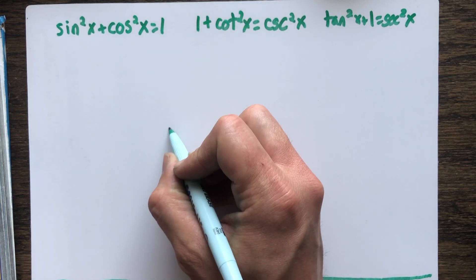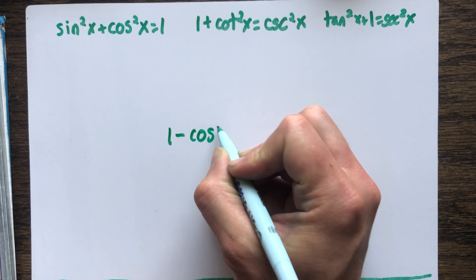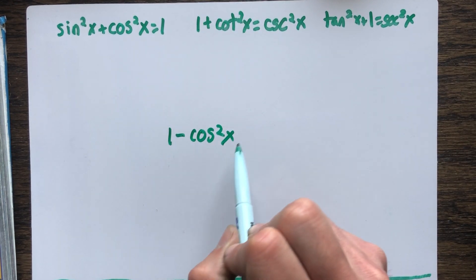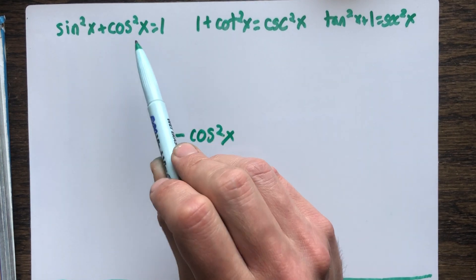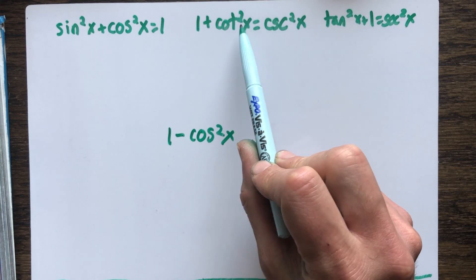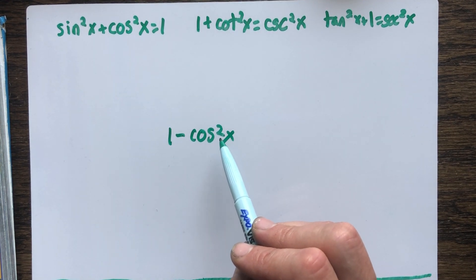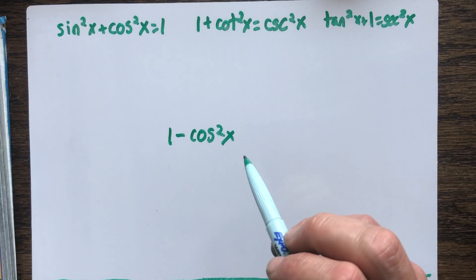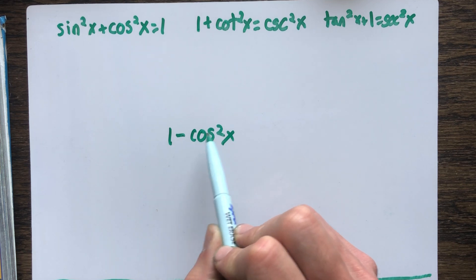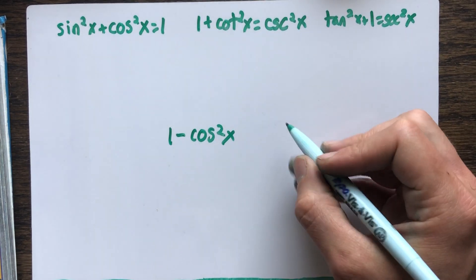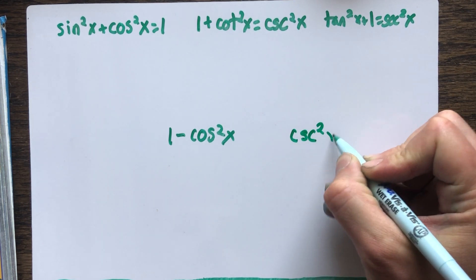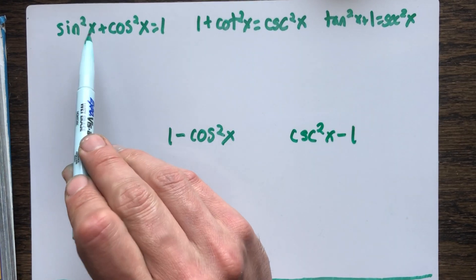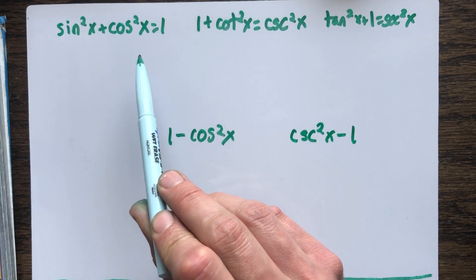What if somewhere in your identity you had something like one minus cosine squared? It's really important to recognize when you can use your Pythagorean identities. First, you have to have a squared term somewhere — like a sine squared or cosine squared. There also has to be addition or subtraction with it. You might look at something like one minus cosine squared or cosecant squared x minus one and think it doesn't match exactly, but that's okay.